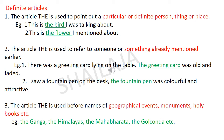Now let's see the definite article. The definite article is 'the'. The article 'the' is used to point out a particular or definite person, thing, or place. For example: this is the bird I was talking about — the specific bird I was talking about. Another example: this is the flower I mentioned about.